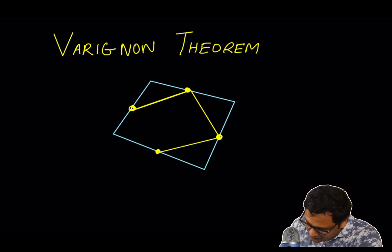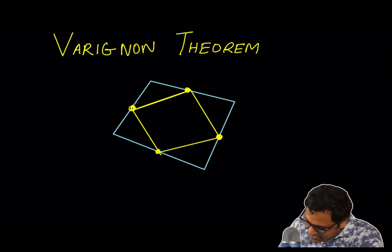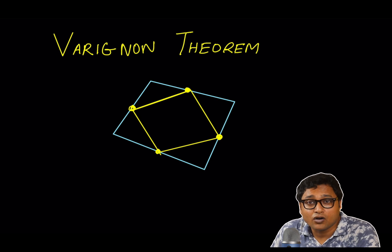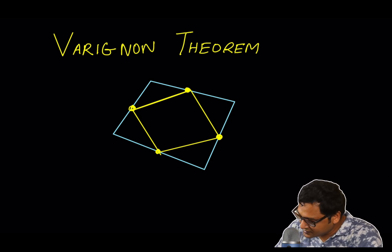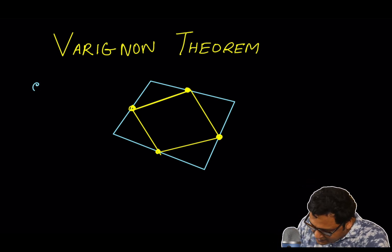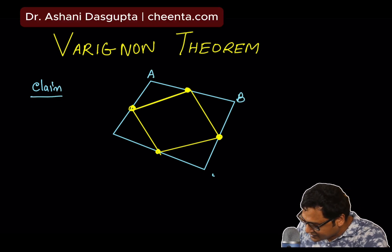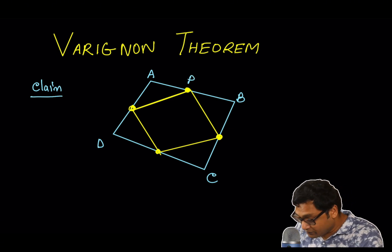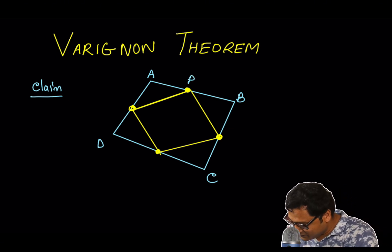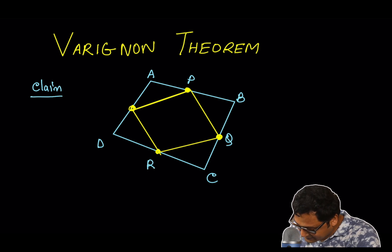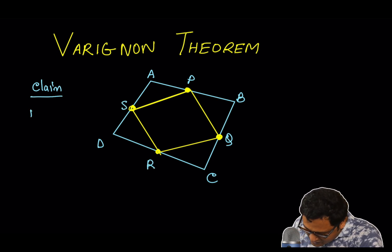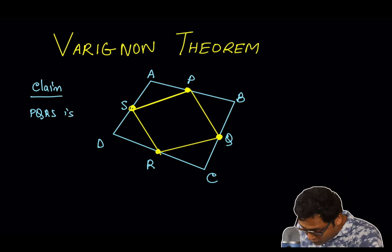You will get a parallelogram that is half the area of the quadrangle. So, the claim is, if this quadrangle is ABCD, and if this quadrilateral is PQRS, then PQRS is a parallelogram.